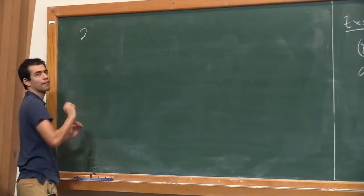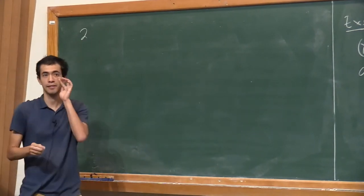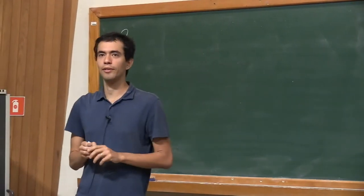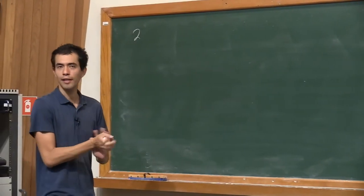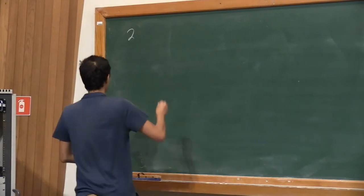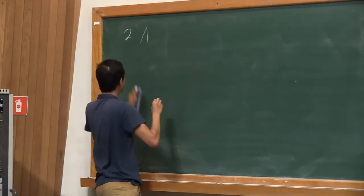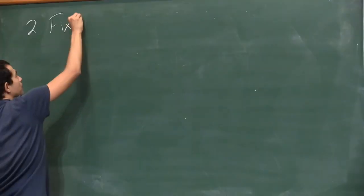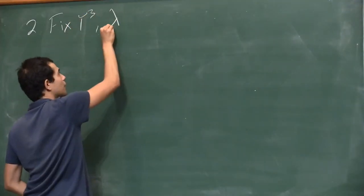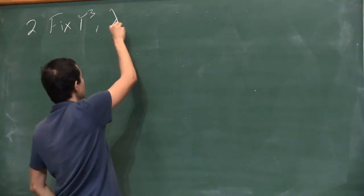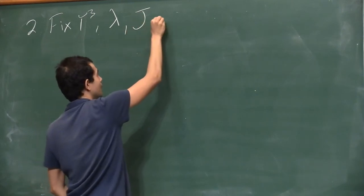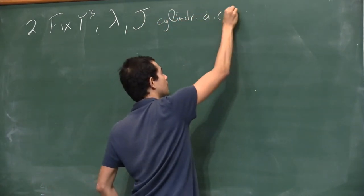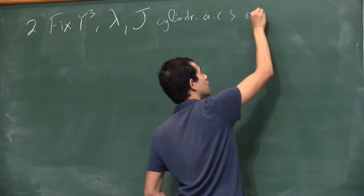Let's define ECH. ECH is a homology theory, and I'll tell you what the generators are. To fix things: we fix a three-manifold, we fix a contact structure, a contact form, and we fix a cylindrical almost complex structure on the symplectization.